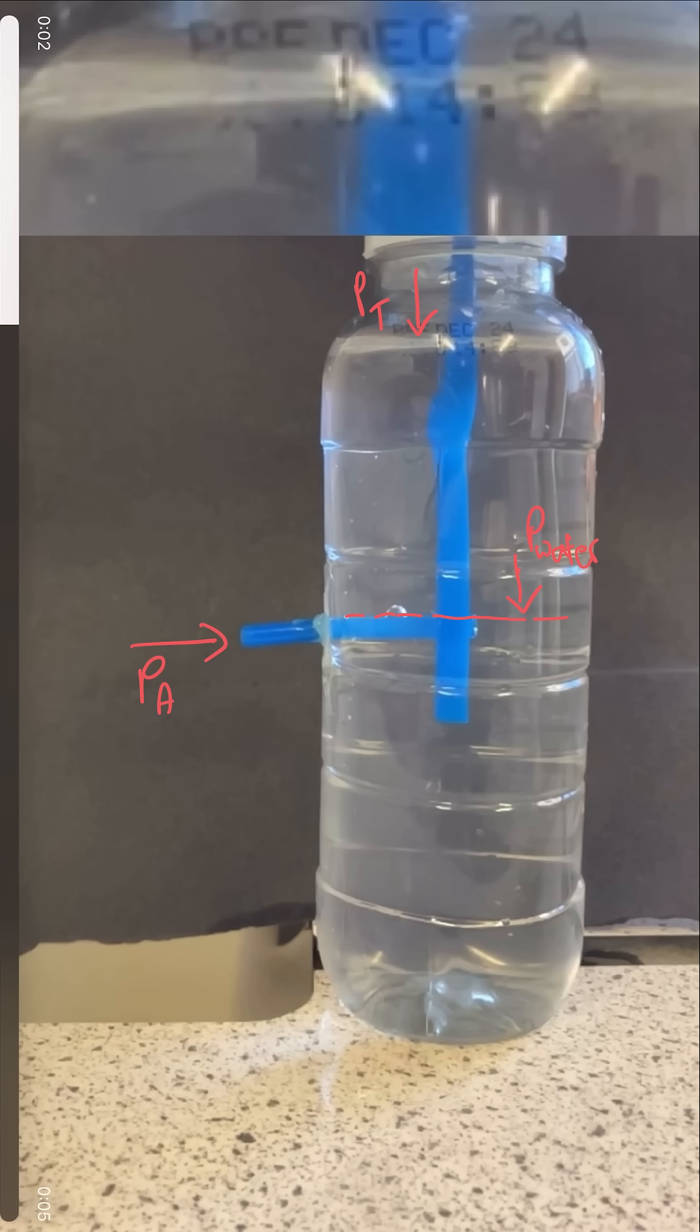We now have an equilibrium where the pressure created by the trapped air plus the pressure created by all this water here is exactly balanced by the atmospheric pressure here, and therefore no water flows out.